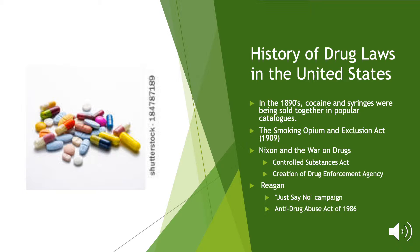Schedule I includes things like marijuana, heroin, and LSD, while Schedule V includes things like cough medicine that might have a little bit of codeine or other substances in it. Nixon also created the DEA — the Drug Enforcement Agency — which today has over 5,000 agents and a budget of over $2 billion.